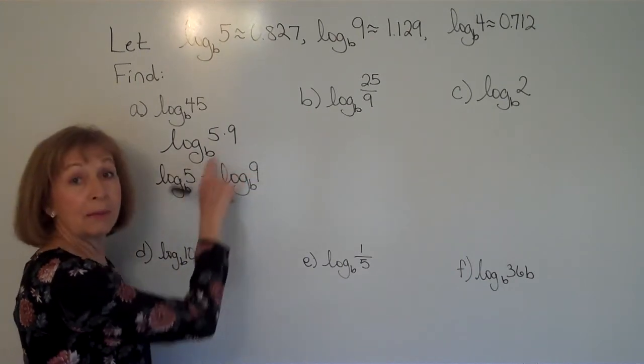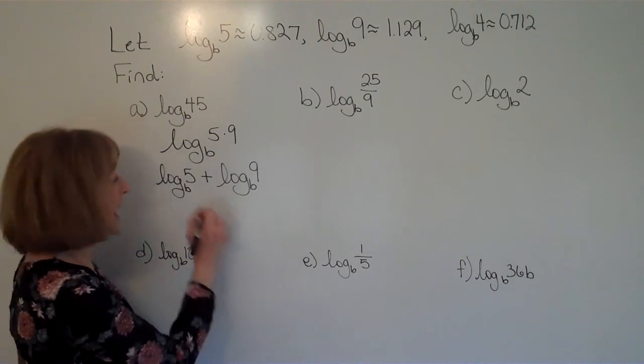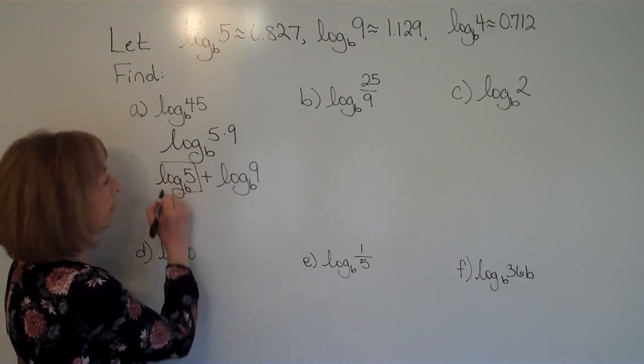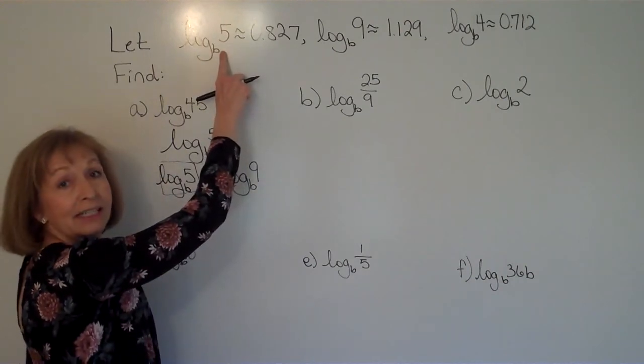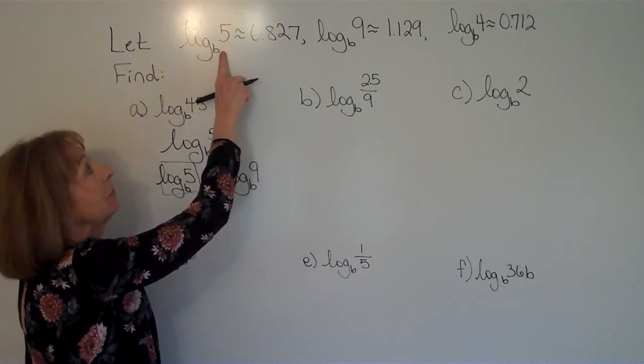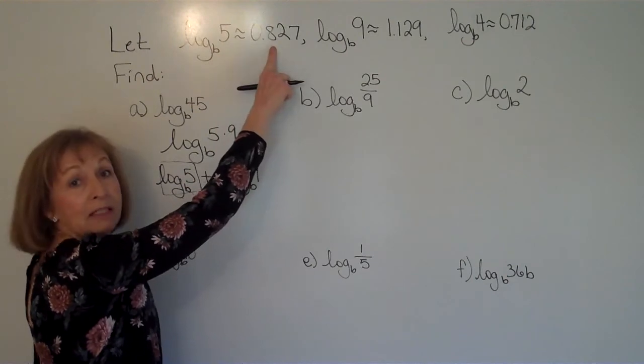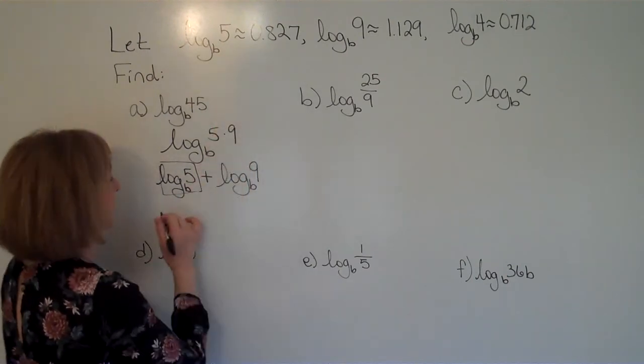Now, once I've used my properties of logarithms to do that, I can look up in the given information and I see that the log base b of 5 is one of my given values. That value, log base b of 5, is approximately 0.827.